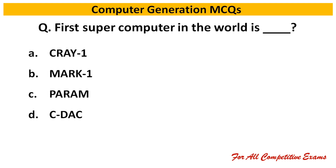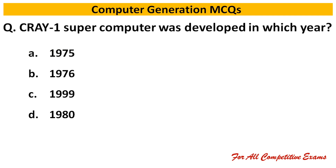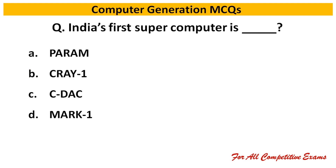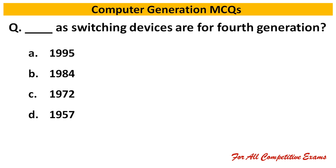Next question: First supercomputer in the world is dash. Right answer is Cray-1. Next question: Cray-1 supercomputer was developed in which year? Right answer is 1976. Next question: India's first supercomputer is dash. Right answer is PARAM.